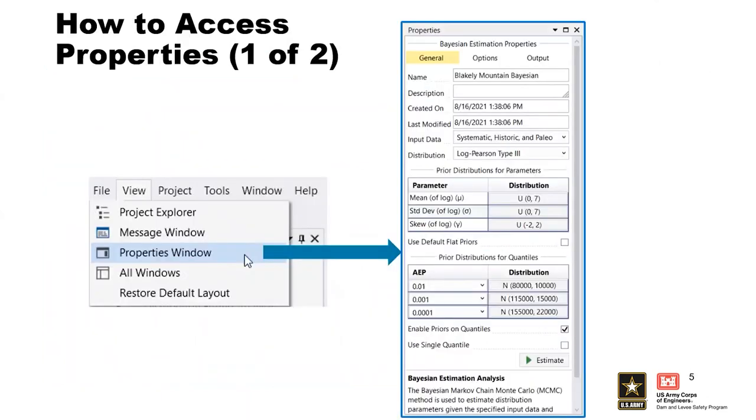How to access properties: the properties window is docked on the right hand side of your screen by default. If it's not, the properties window can be accessed via the view menu and the properties window.